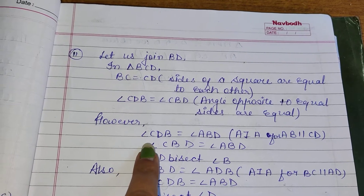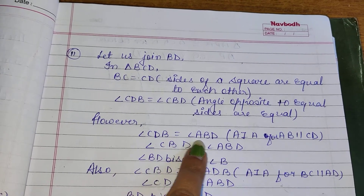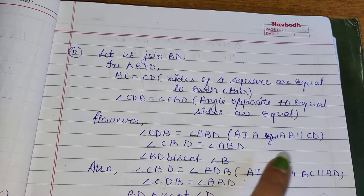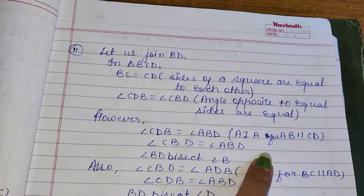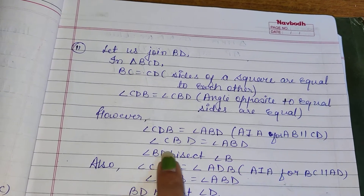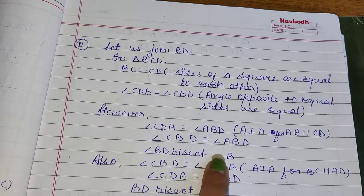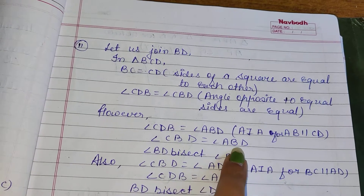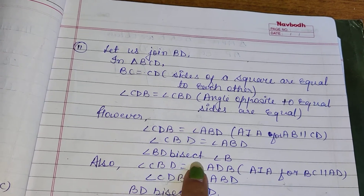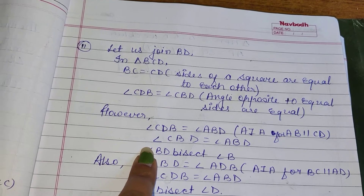However, angle CDB is equal to angle ABD — alternate interior angle for AB parallel CD. And angle CBD is equal to angle ABD because BD bisects angle B. Also, angle CBD equals angle ABD — alternate interior angle for BC parallel AD.